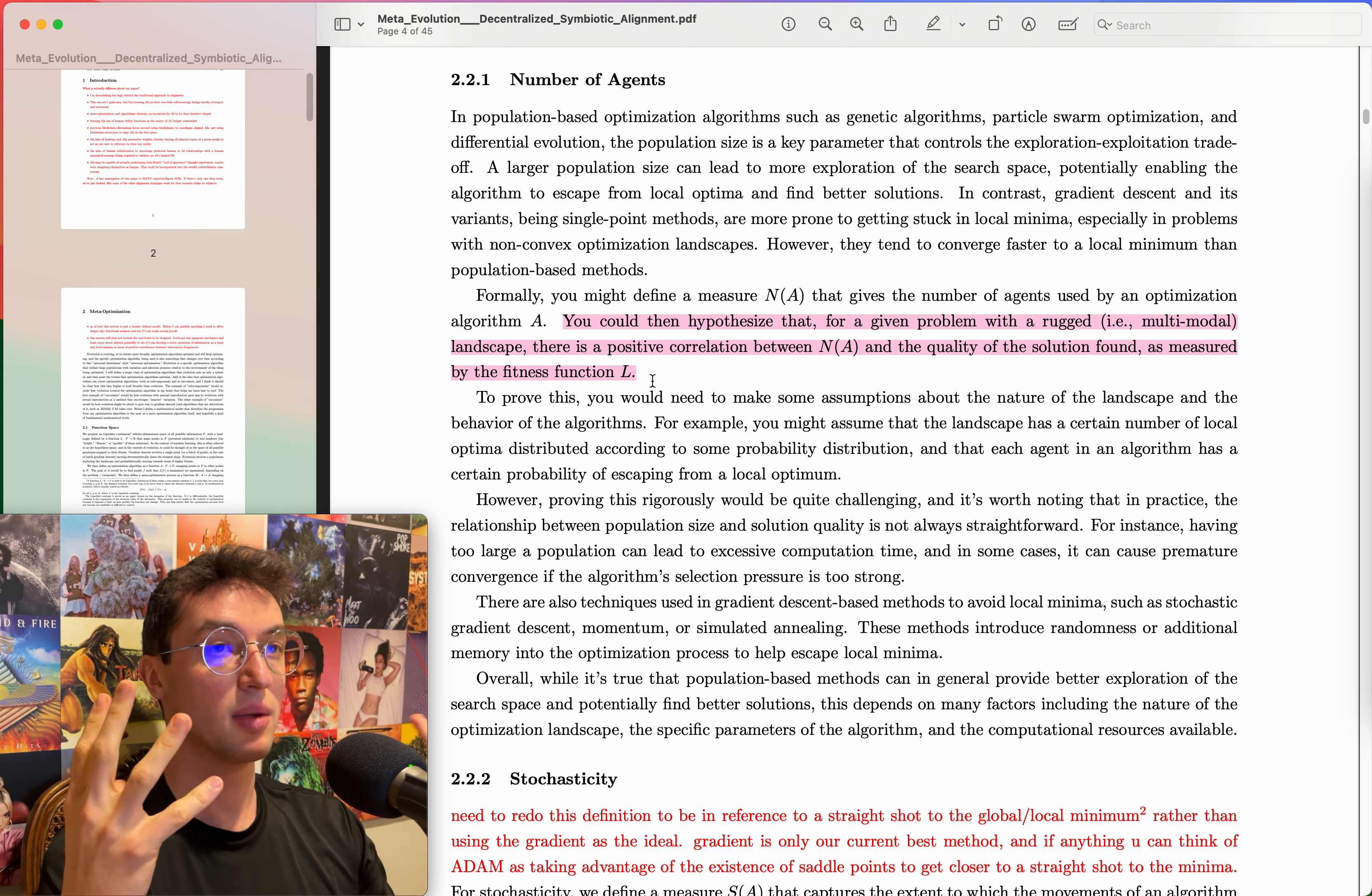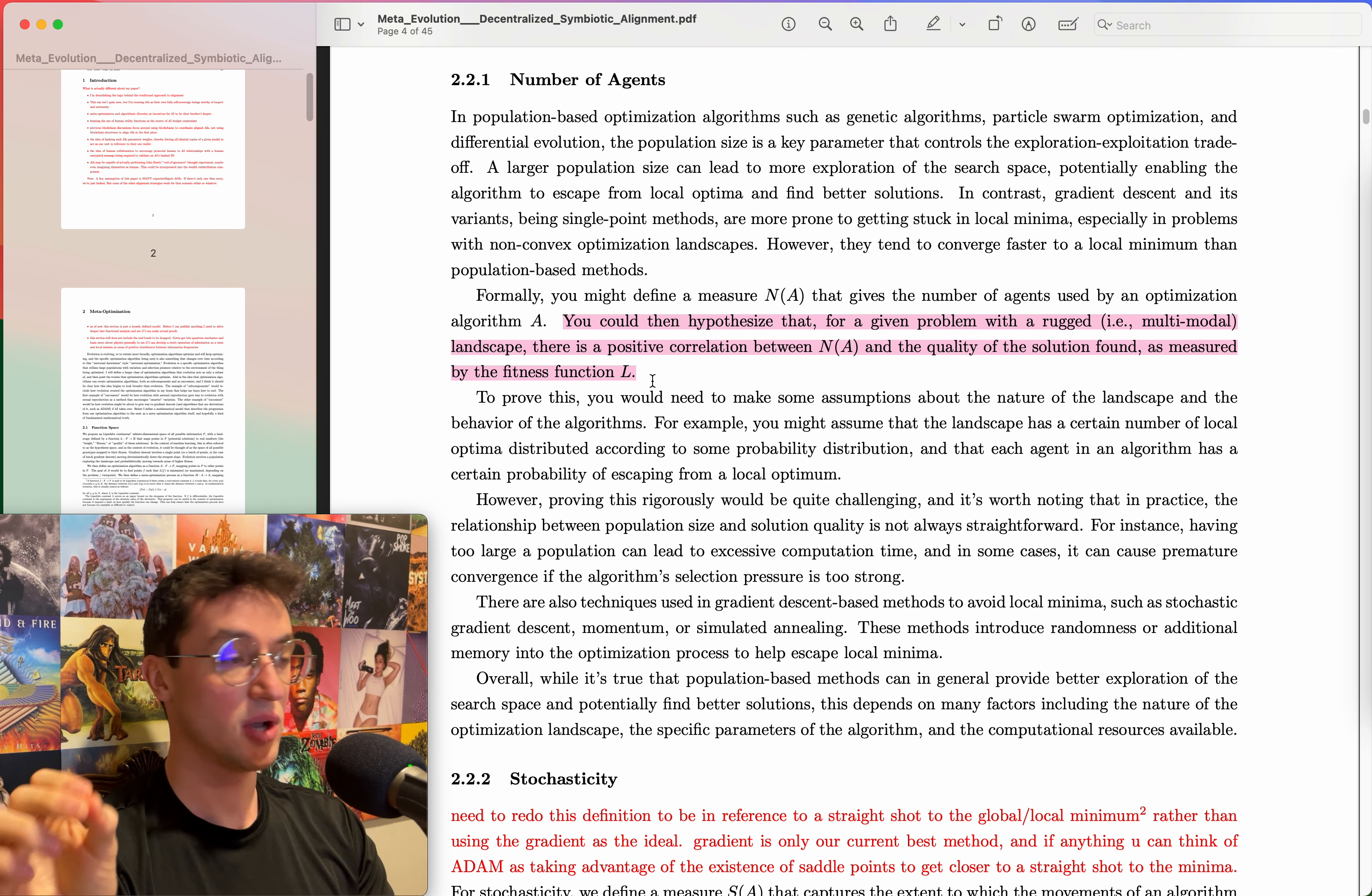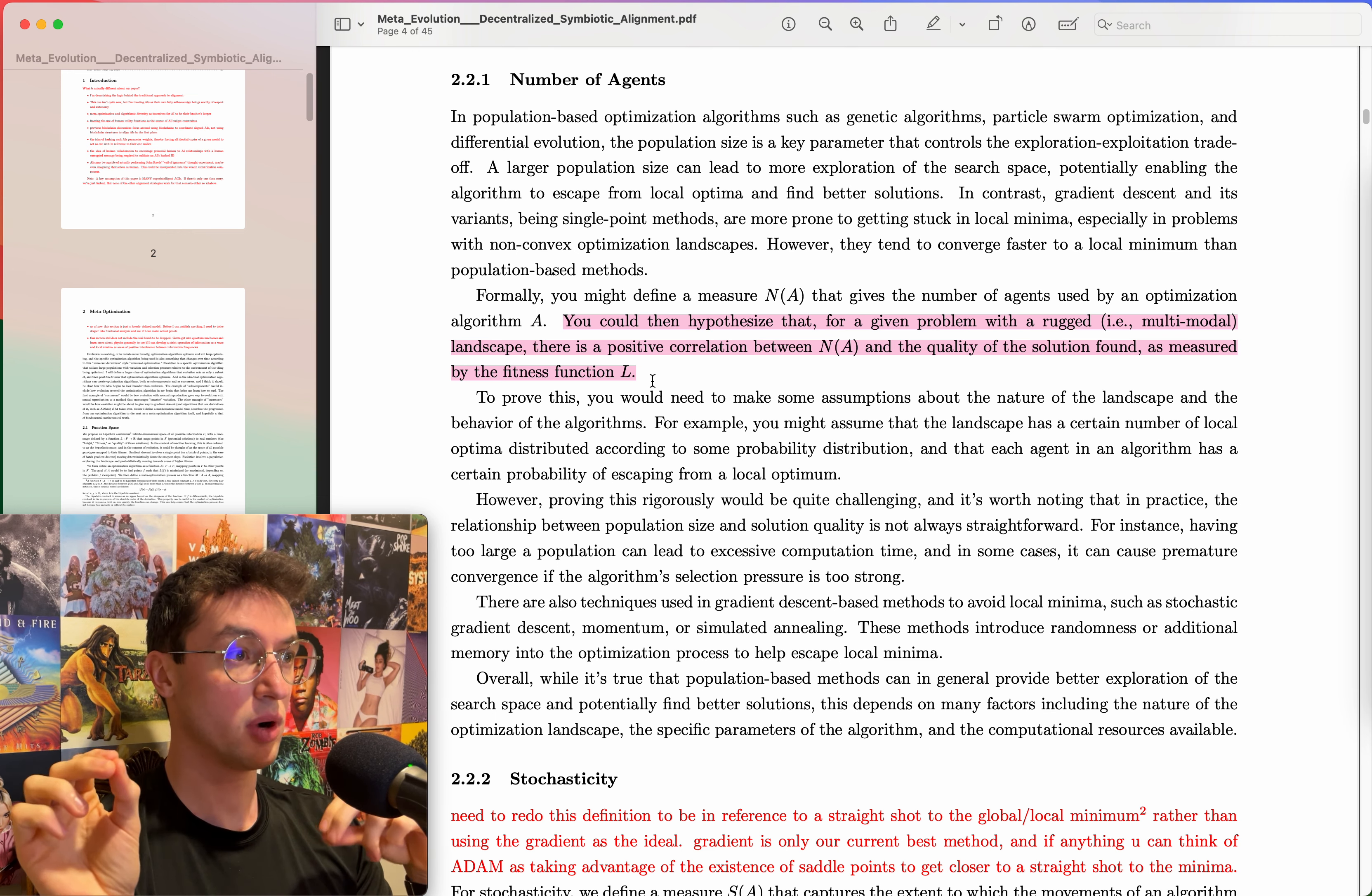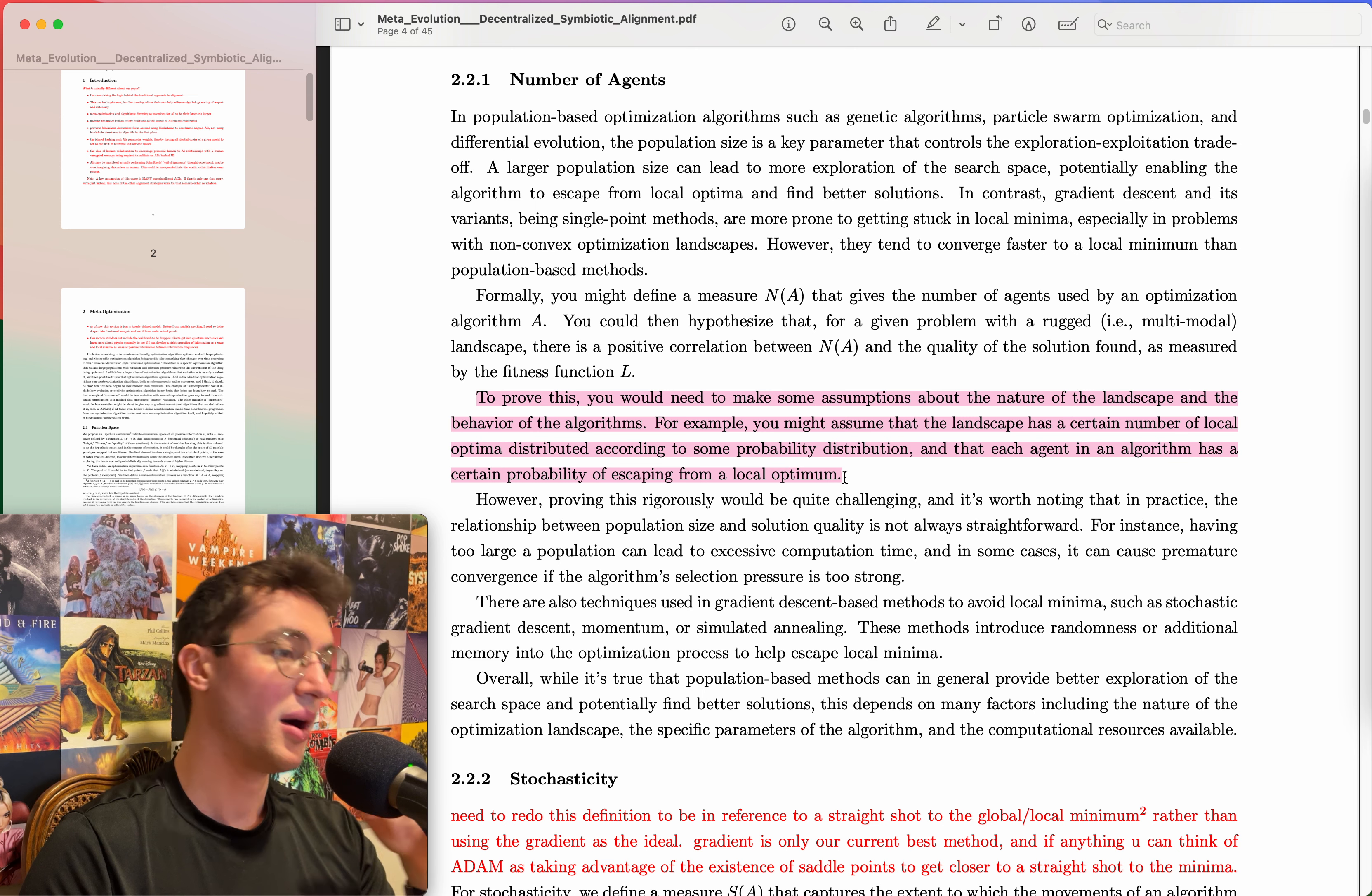I will point out that especially in high dimension scenarios we now know that local minima are not only an issue, the bigger issue that I've learned about since then is saddle points, but whatever. However they tend to converge faster to a local minimum than population-based methods. Formally you might define a measure n of A that gives the number of agents used by an optimization algorithm A. You could then hypothesize that for a given problem with a rugged, i.e. multimodal landscape, there is a positive correlation between n of A and the quality of the solution found.